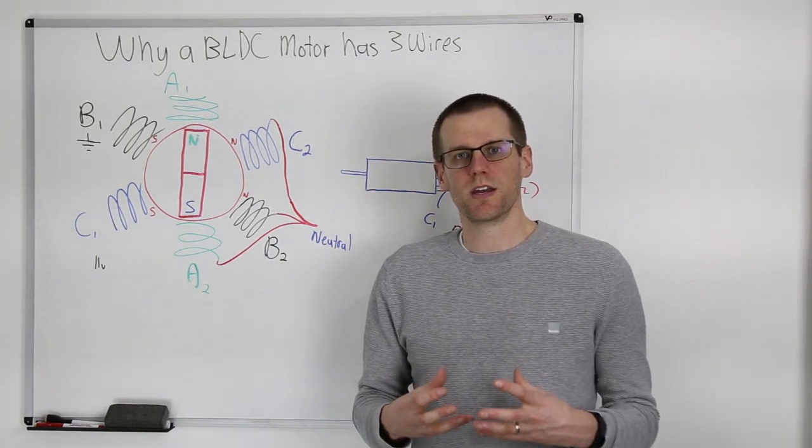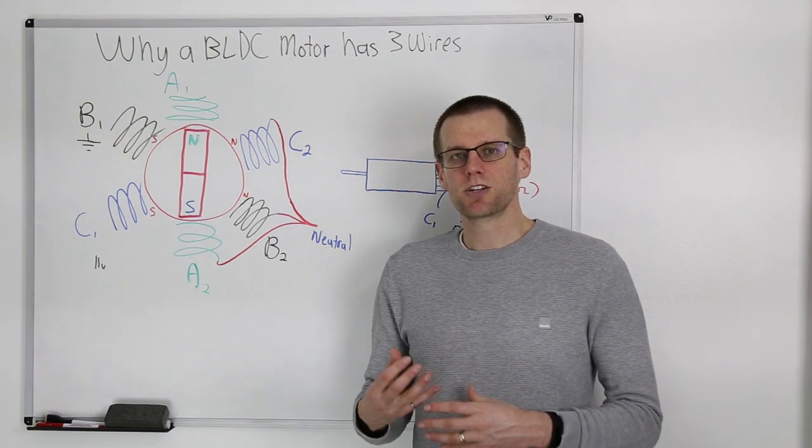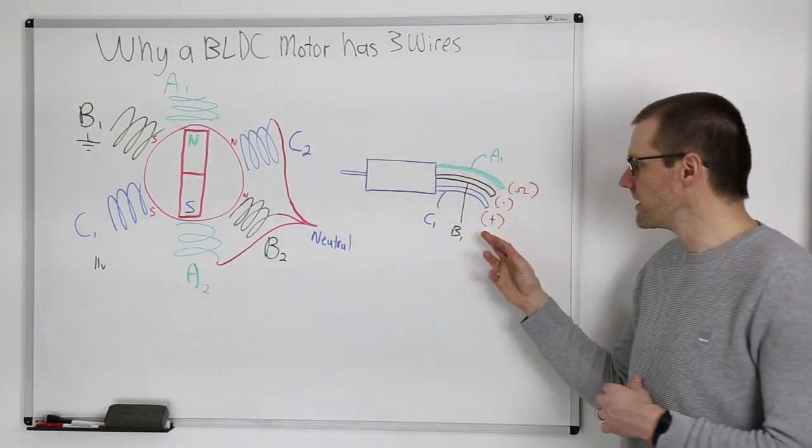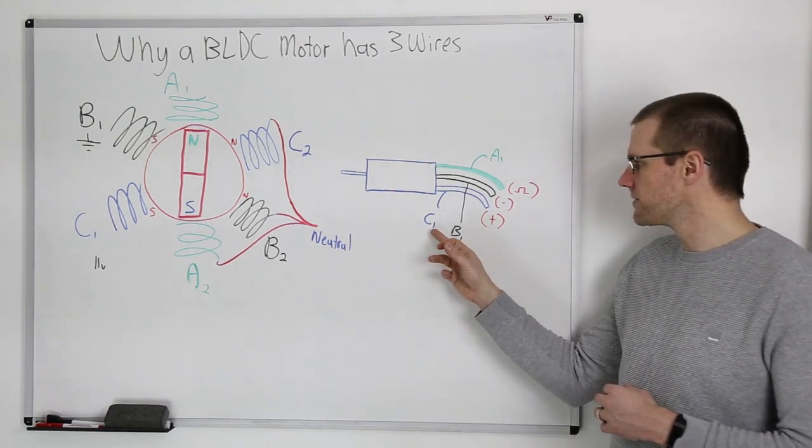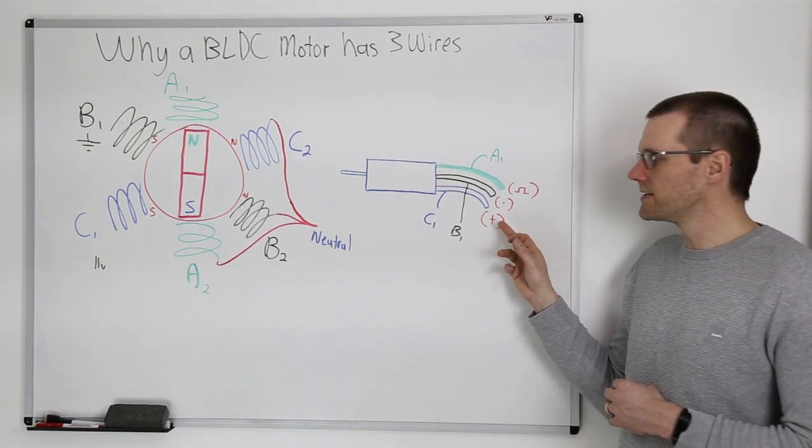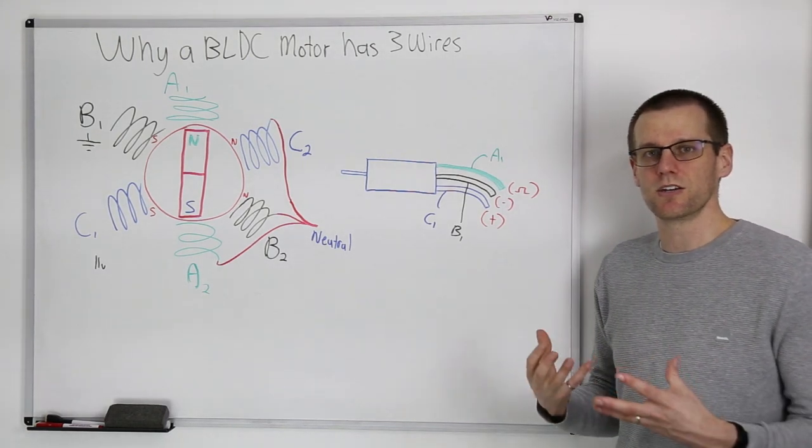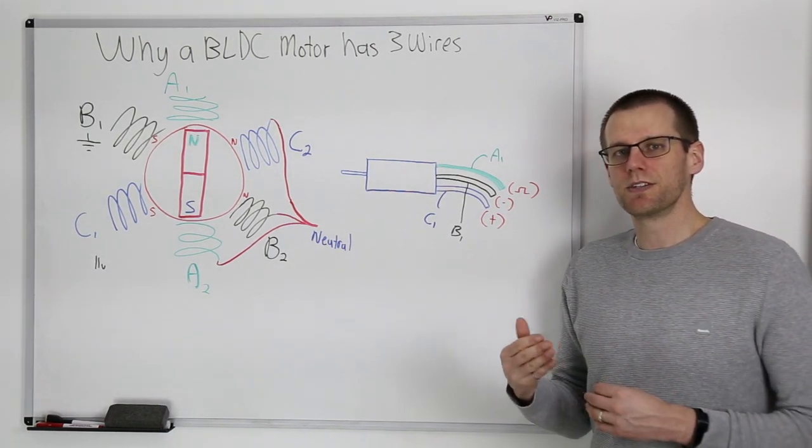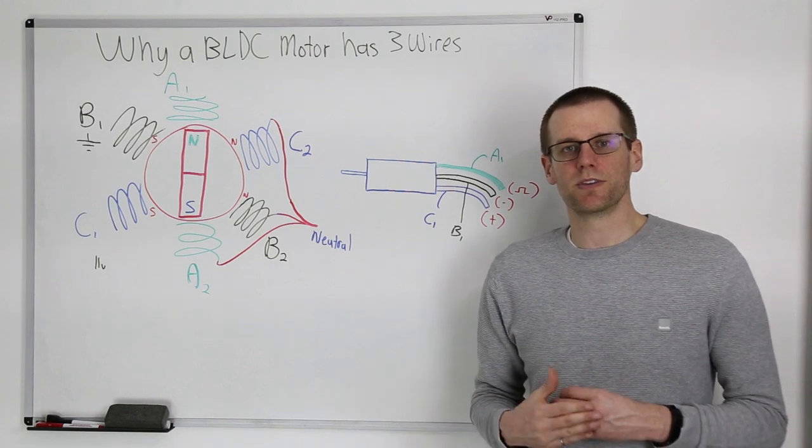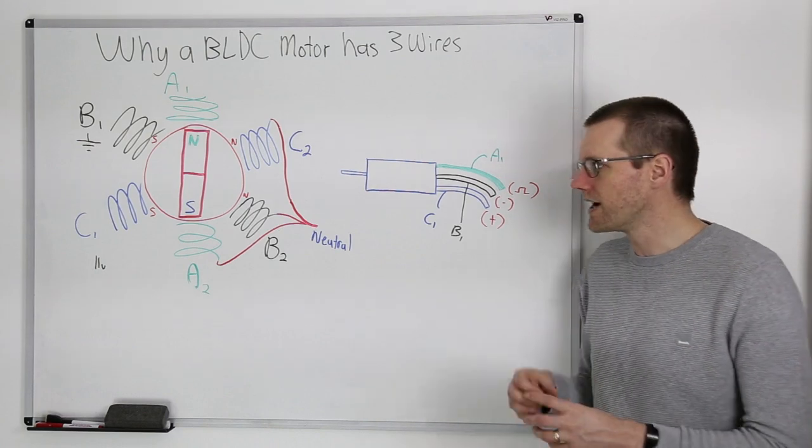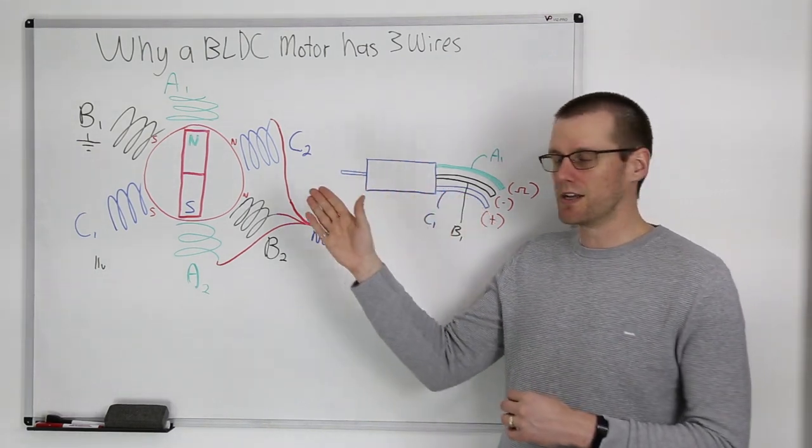Now when this question was brought to me, the person actually gave their own answer. That answer consisted of, is it because one of the wires, for example C1 is positive, the second wire is negative, and the third wire is a signal wire. Well, this is interesting because as I thought about this, this is actually kind of correct and also not so correct. And that's what I want to dive into and understand today.